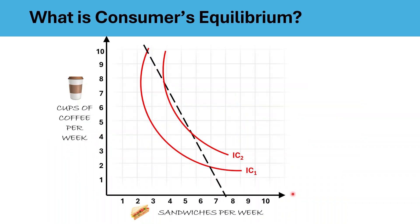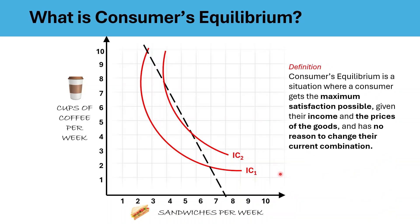What is consumer's equilibrium? Consumer's equilibrium is a situation where a consumer gets the maximum satisfaction possible given their income and the prices of the goods and has no reason to change their current combination. Graphically, this point is shown where the budget line just touches an indifference curve. We call this the point of tangency, which is point E on this diagram.